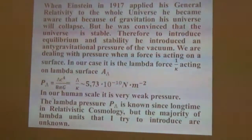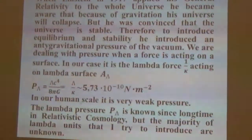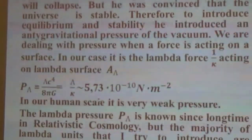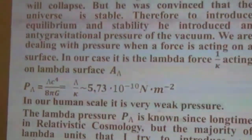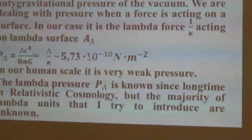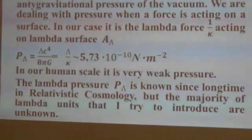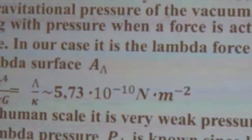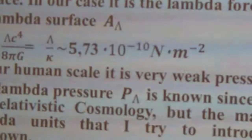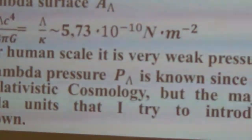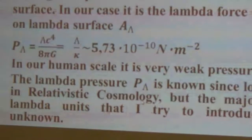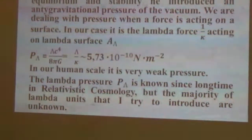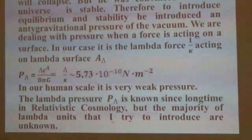This pressure in our human scale is very weak — it is 10⁻¹⁰ newtons per meter squared. The lambda pressure has been known for a long time in relativistic cosmology, but the majority of lambda units that I try to introduce are unknown.